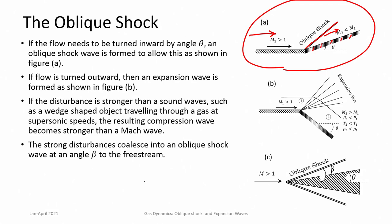Unlike the normal shock, in an oblique shock it is possible for the Mach number downstream of the shock to be greater than one. So flow before the shock is greater than one, and flow after the shock can continue to be greater than one — that is a possibility in oblique shocks. A turn towards itself produces compression and an oblique shock.